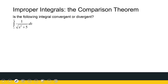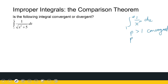When we do a comparison test, we obviously have to compare with something we're familiar with. One of the integrals we've looked at is the integral from 1 to infinity of 1 over x to the power p dx. We saw that if p is greater than 1, it's convergent, and if p is less than or equal to 1, it's divergent. So we're going to compare to this theorem — that's something we already know.